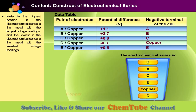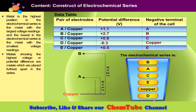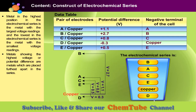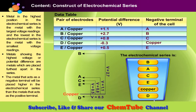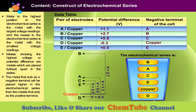From the data and the electrochemical series, we can see that metals showing the highest voltage or potential difference are metals which are placed furthest apart in the series. The metal that acts as a negative terminal will be placed higher in the electrochemical series than the metal that acts as the positive terminal.